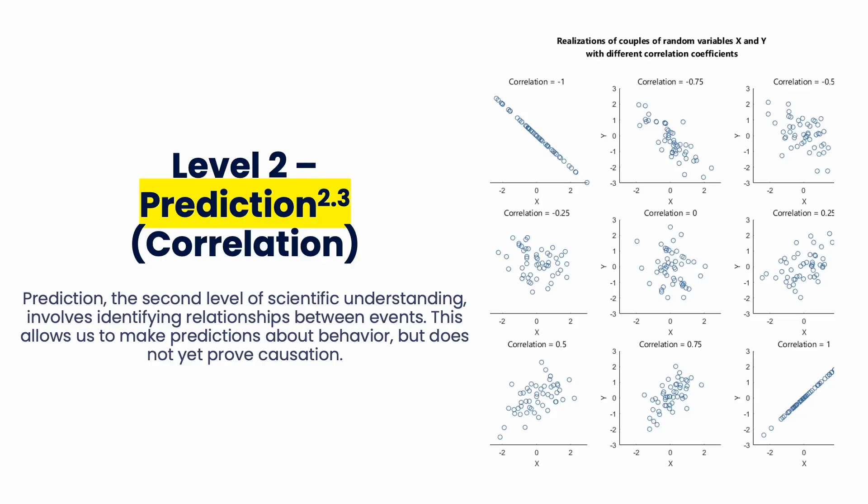So the next level is prediction. This is where you'll do one observation and then another observation and see if they are similar, if they correlate. The big thing here is correlation does not mean causation.